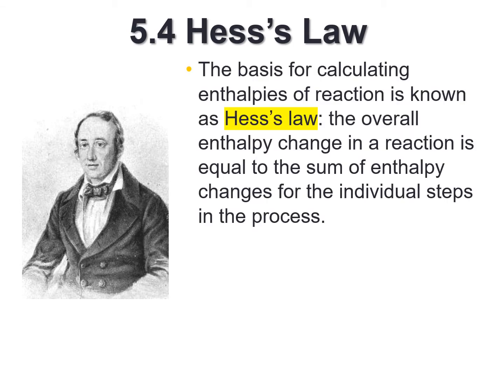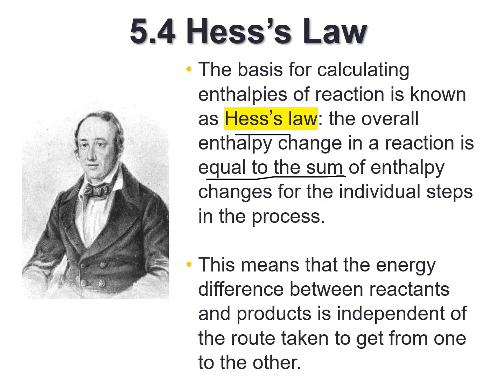So the basis for calculating enthalpies, we've got Hess's Law, and it says the overall enthalpy change in a reaction is equal to the sum of the enthalpies of the individual steps. We're going to have individual equations, we're going to know our final destination, and we're going to need to manipulate those individual equations to come up with a final answer. This means that the energy difference between reactants and products is independent of the route taken to get from one to the other.